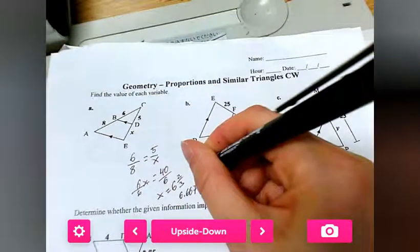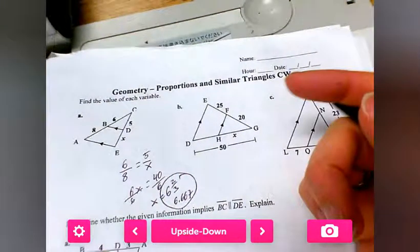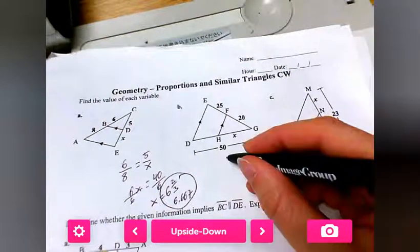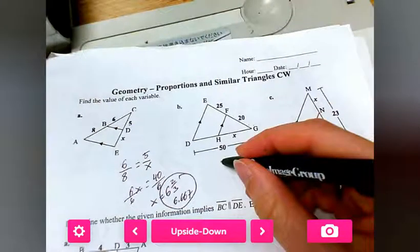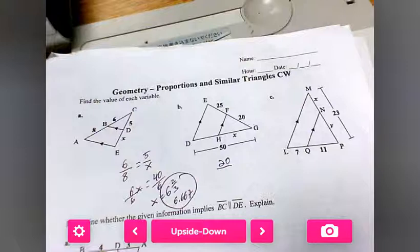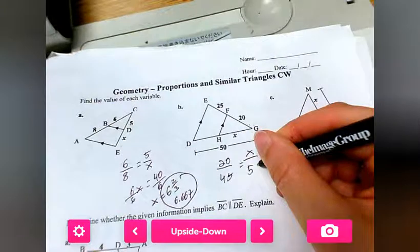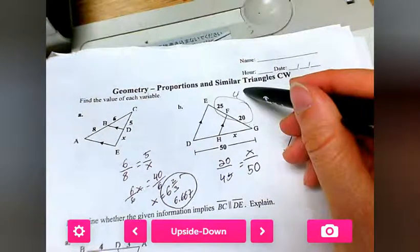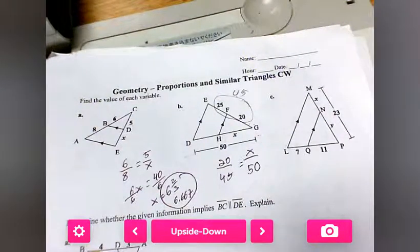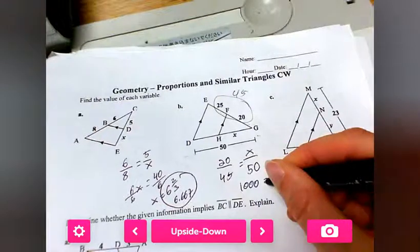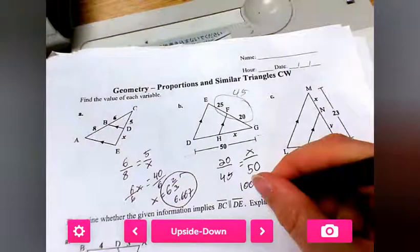For part B, it's a little bit different than what we talked about. We're going to go 20 over this whole length, so 20 over not 25 but 25 plus 20, so 45 equals x over 50. I added these two together to give me 45 because this length was like that. We cross multiply: 20 times 50 gives me 1000 equals 45x, and we take 1000 divided by 45 and we get x equals 22.22.